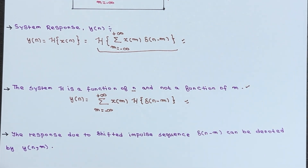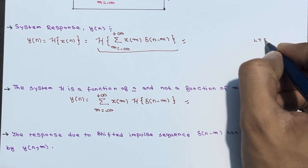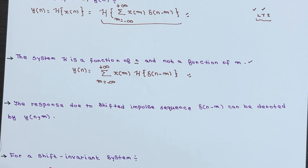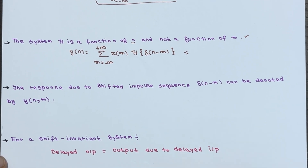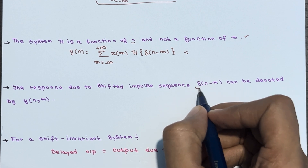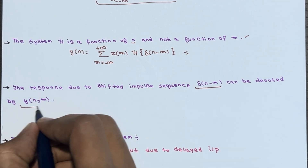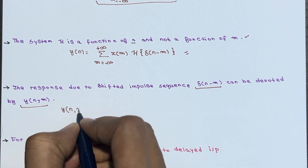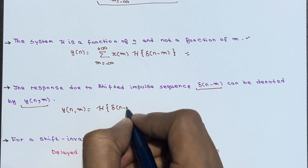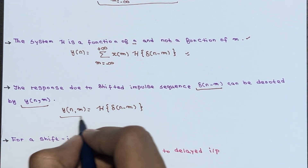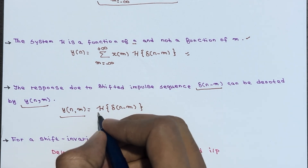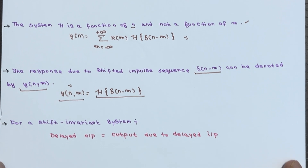For an LTI system you should be aware of linearity and time invariance. The response due to a shifted impulse sequence δ(n−m) is denoted as y(n, m), which equals the transform of δ(n−m). This is the response due to the shifted impulse sequence.